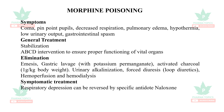Morphine poisoning — morphine is basically an opioid. You see sedation and coma. Pin point pupils. Respiratory depression, pulmonary edema, reduced urinary output, and gastrointestinal spasm. General treatment is stabilization, ABCD intervention, emesis, gastric lavage, and forced diuresis.